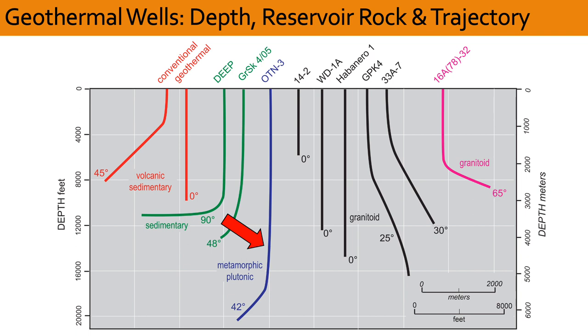The blue well, labeled OTN-3 in Finland, is the deepest, and it was also recently completed. It was drilled through granite and gneiss to over 6 kilometers depth, where the temperature is about 120 degrees Celsius. The potential of EGS is being evaluated here for district heating rather than electricity generation.